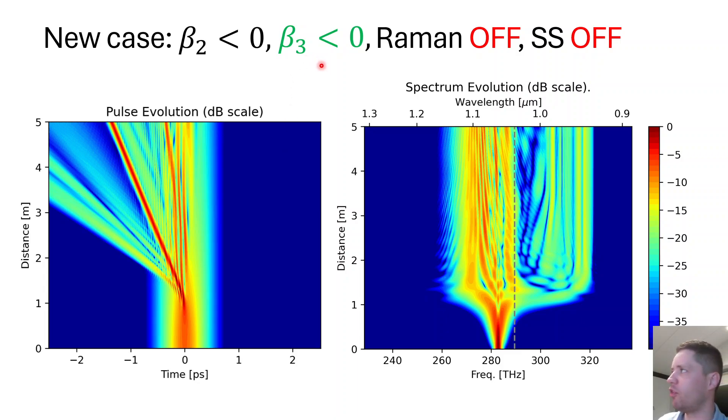And of course if we'd flipped the sign of beta-3 so it's negative but has the same magnitude, we'd see the opposite thing because beta-3 being negative means that both red light and blue light will propagate more quickly than the carrier as we can see right here.